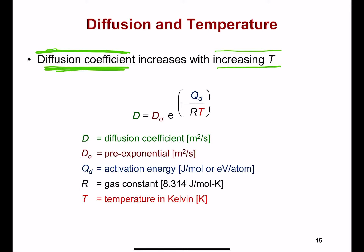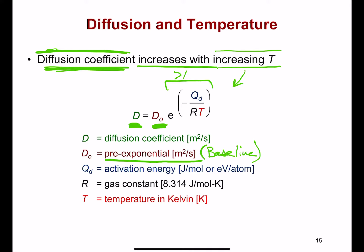To help us relate that, we have an equation similar to what we've seen in the previous chapter on vacancies as a function of temperature. The diffusion at a particular temperature is a function of some initial value — the pre-exponential value, sometimes called the baseline diffusion constant D₀. It gets multiplied by an exponential that increases with temperature, moving D up from D₀ to a larger diffusion constant.